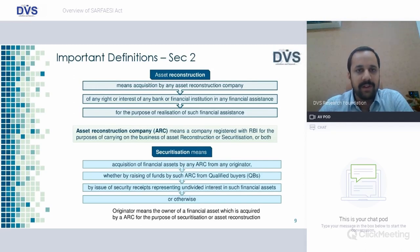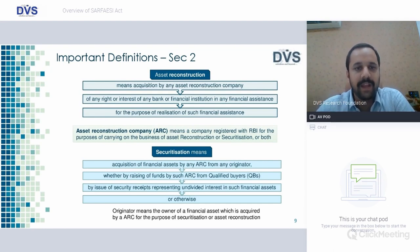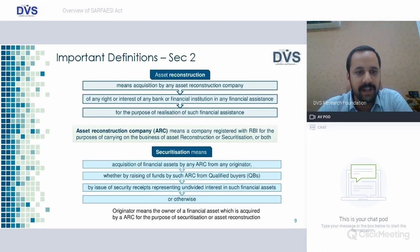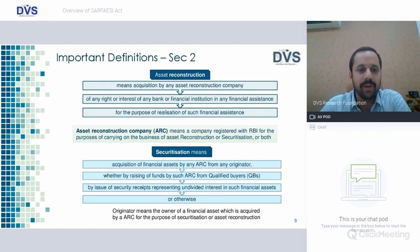Important definitions covered in Section 2: Asset Reconstruction means acquisition by any ARC of any rights or interest of any bank or financial institution in any financial assistance for the purpose of realization of such financial assistance. Asset Reconstruction Company means a company registered with RBI for the purpose of carrying on the business of asset reconstruction or securitization or both.